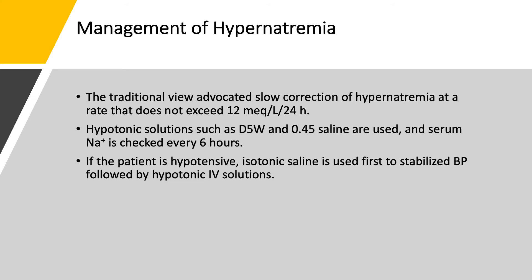Regarding management of hypernatremia, the traditional view has been slow correction — no more than 12 mEq per liter per day. For that purpose, we use a hypotonic solution, either D5W or 0.45% saline. Usually we use D5W. We use half-normal saline if the patient is very hyperglycemic or if you want to support the circulation because they're a little hypotensive.